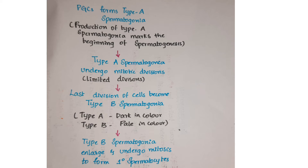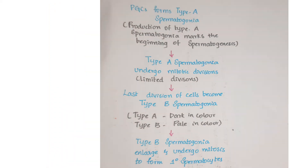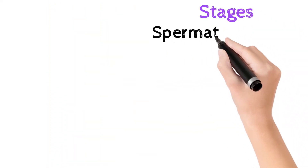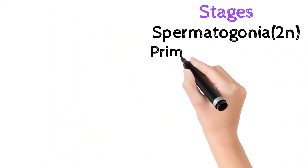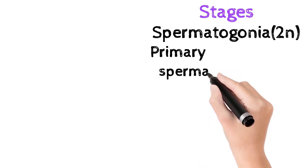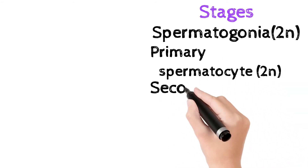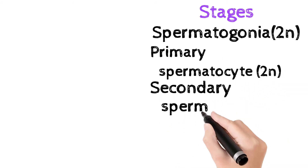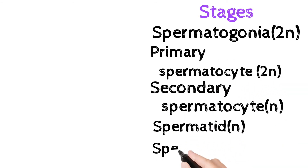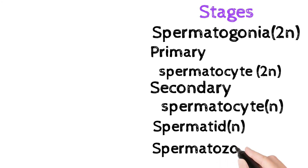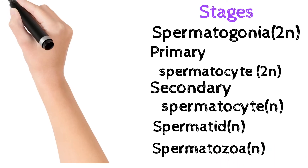To differentiate type A and type B spermatogonia: type A are dark in color while type B are pale in color. The type B spermatogonia enlarge and undergo mitosis to form primary spermatocytes. This concludes spermatocytosis.